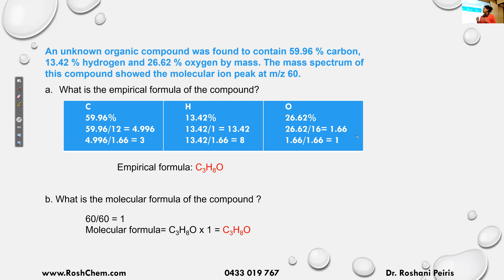The empirical formula is the simplest whole number ratio between the moles. Therefore to get a simplest whole number ratio, I divide the moles by the smallest value. So I divide everything by 1.66. Then I get a ratio of three to eight to one. So therefore my empirical formula is C₃H₈O.